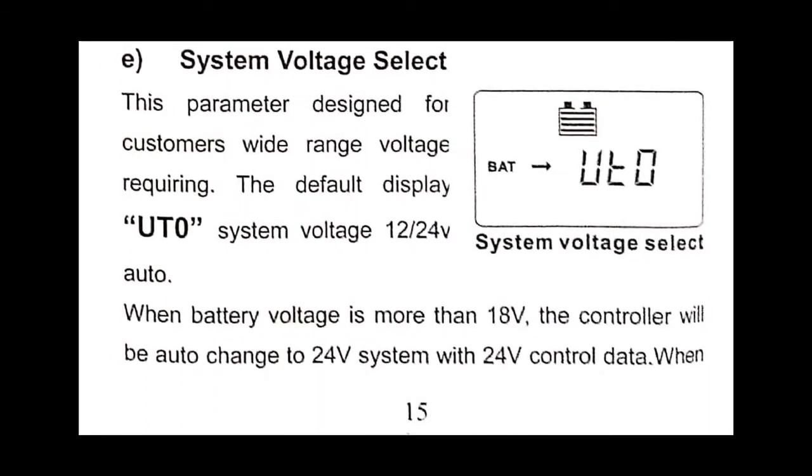Normally system voltage we can't change in other solar controllers, but in this kind of solar controller we can change it. When you change the settings in menu, you go to select the system voltage menu.